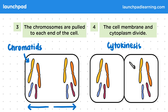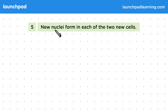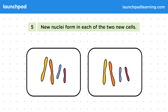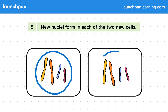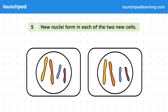We're now very close to having two new cells. The final stage of mitosis is that new nuclei form in each of the two new cells. The nuclei start to form around the chromatids, and now we have two new diploid cells. You don't need to know the names of the different phases of the mitosis stage, but you should be able to describe the general mechanism that takes one parent cell to two daughter cells.